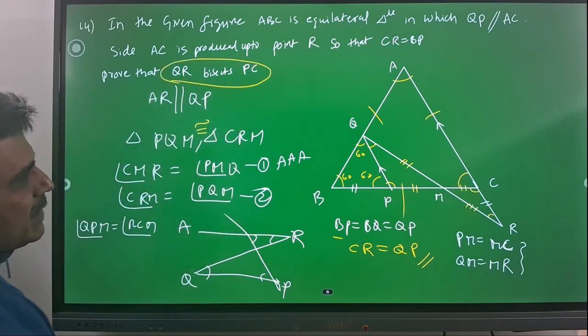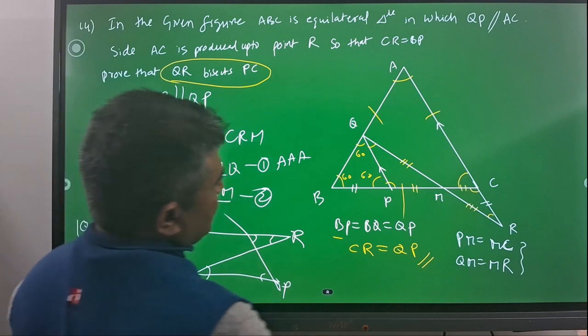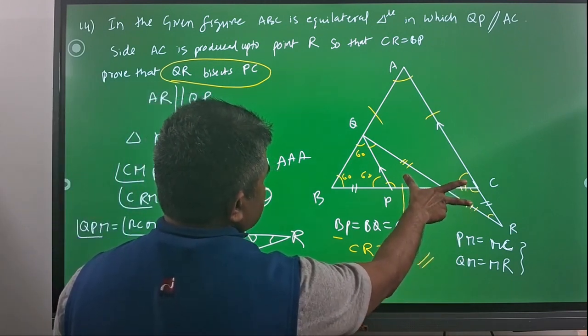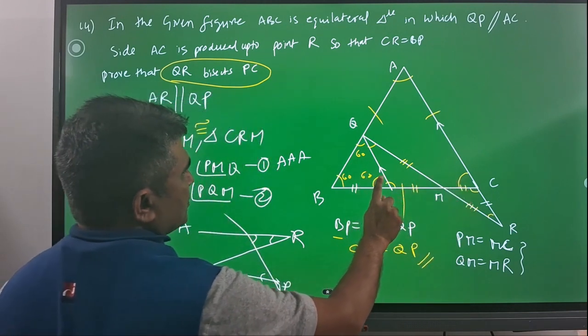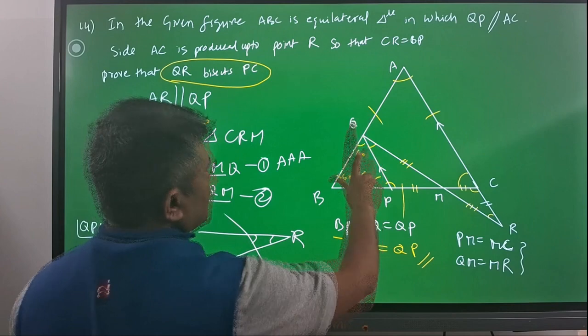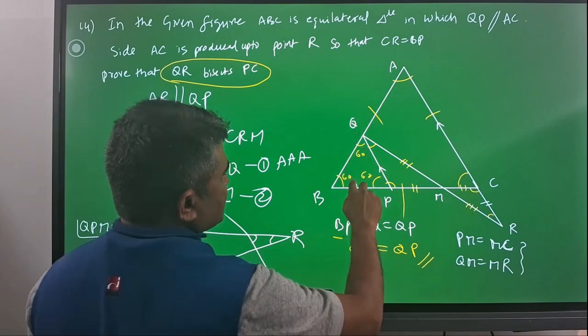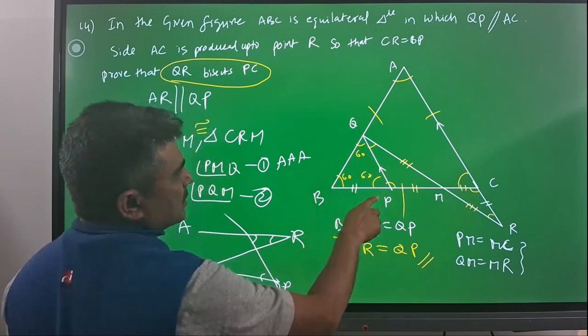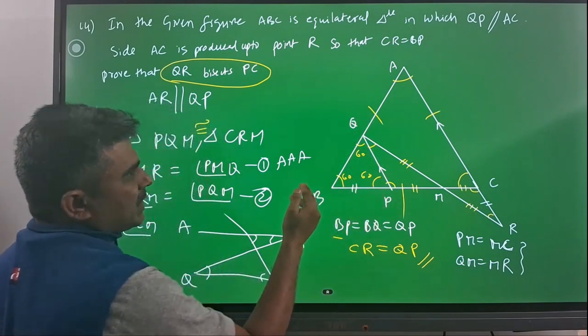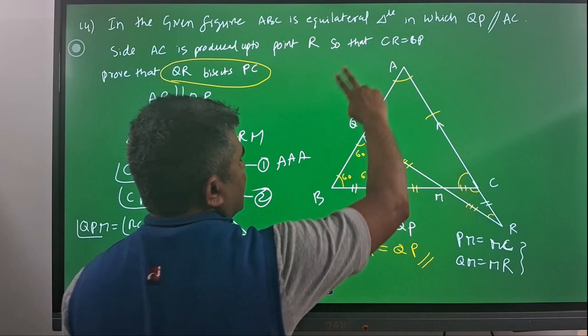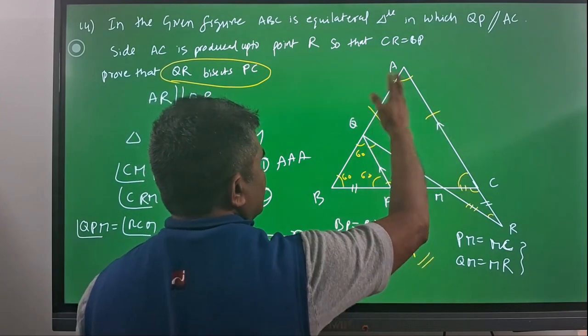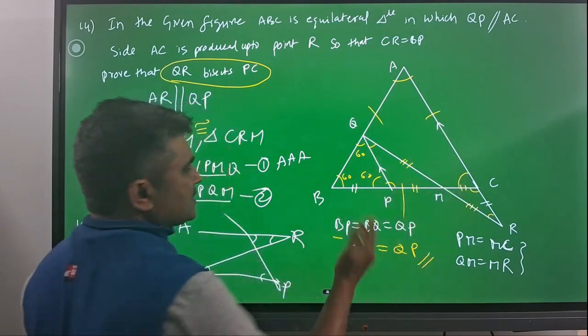The main turning point is that we had equal angle relations, but apart from that, we obtained the side relation from the equilateral triangle BQP, which itself comes from the larger equilateral triangle ABC.